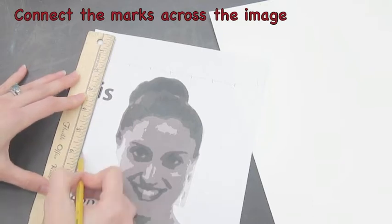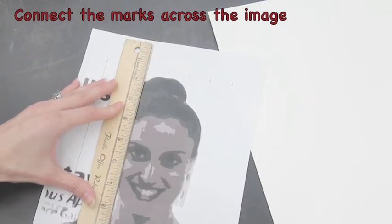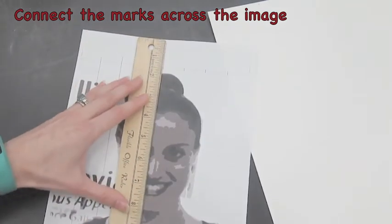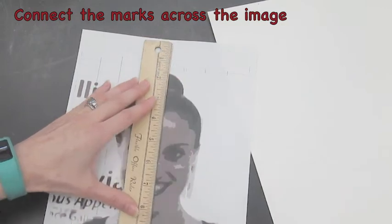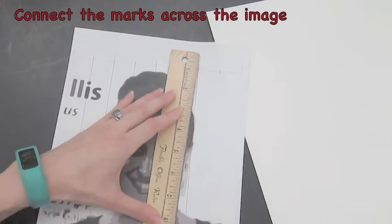With those marks correct, you can now turn your paper or your ruler and connect those two marks across your image. If you have dark areas of the image, it will be helpful if you press really hard with your pencil so that you can see your lines.